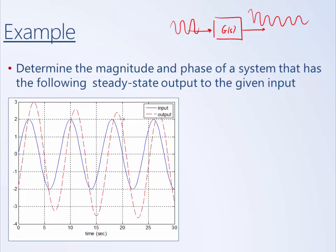The red line and the blue line have the same frequency, but they are scaled — the amplitude of the output is different from the amplitude of the input — and they are phase shifted, so the peaks don't necessarily line up. To generate this Bode diagram experimentally, we want to estimate this scaling and this phase shift.